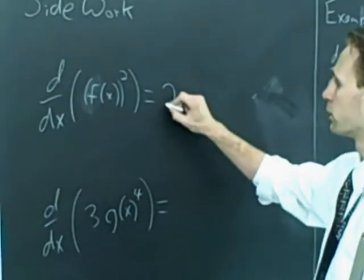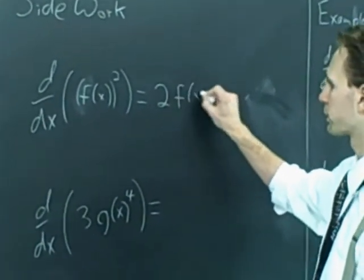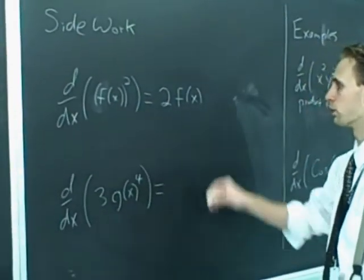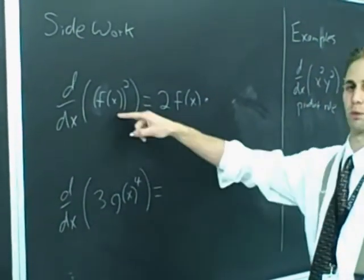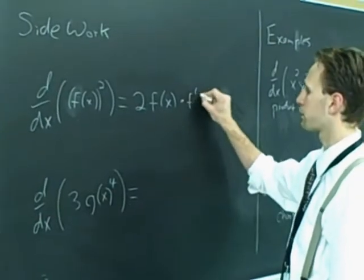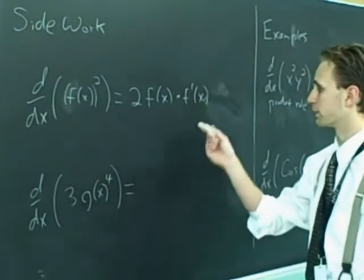By the chain rule, this would be 2 f of x. Just bring down the 2 via the power rule. And you'd multiply that by the derivative of the inside, f prime of x. And that's the best that you can do.